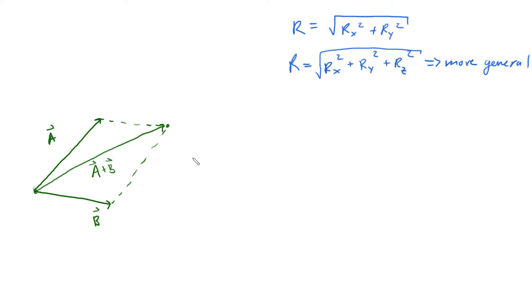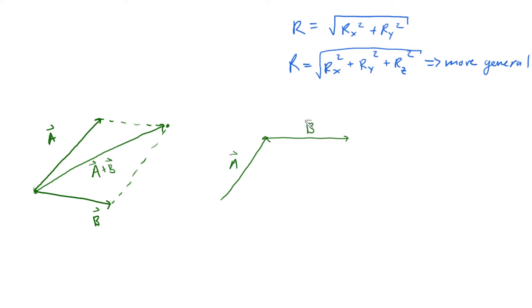The other way is the tip-to-tail method: you translate vector b so that its tail touches the tip of vector a, and then simply draw the line connecting the start of a to the tip of b. That is a plus b. That's how you do it geometrically.